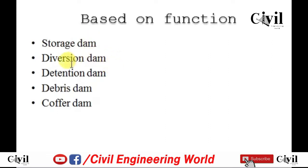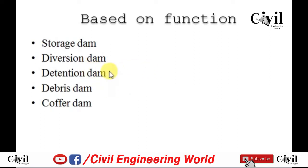A diversion dam is the type of dam used to divert water in order to change its direction. A detention dam is used to store water during heavy rains and floods, and after the rain the water is allowed to flow through a spillway slowly in order to reduce damage during floods.